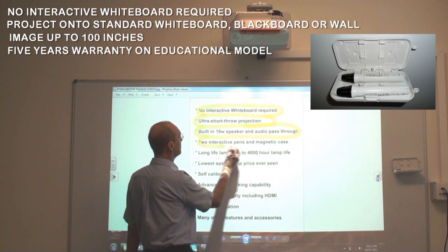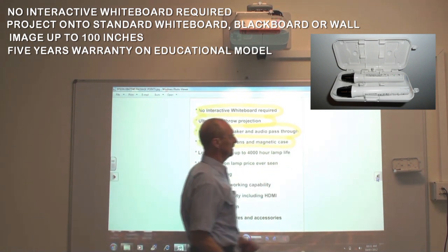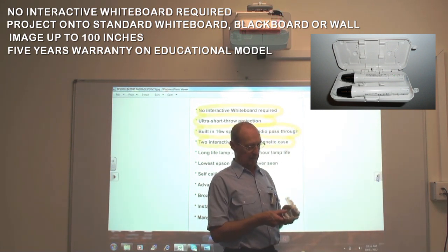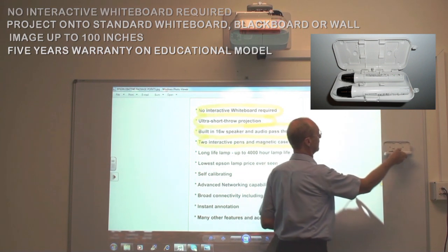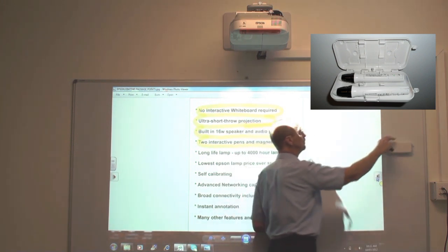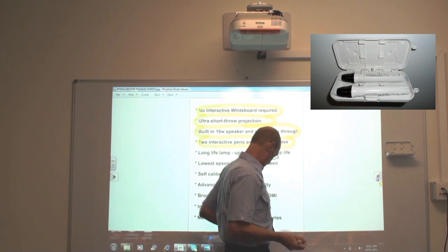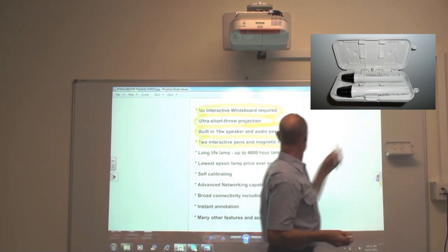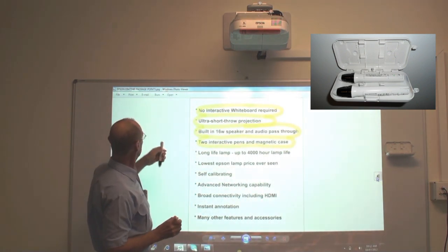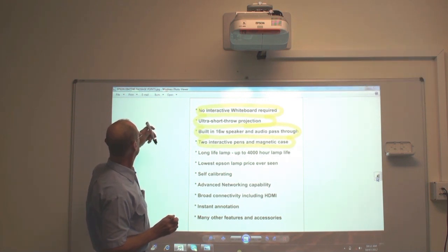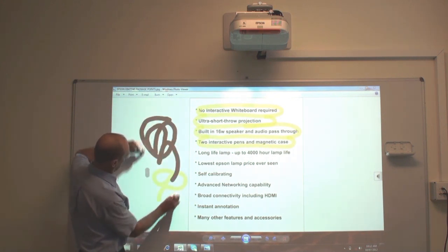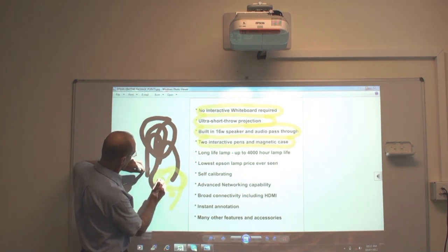The system comes with two interactive pens and a magnetic case. The magnetic case holds the pens and also magnetizes the wall so they're easily obtained. The pens work together. I'll just demonstrate that. Now this pen, turn it on. Okay. This pen's operating and at the same time I can use this pen. So you can have two people operating at the same time.